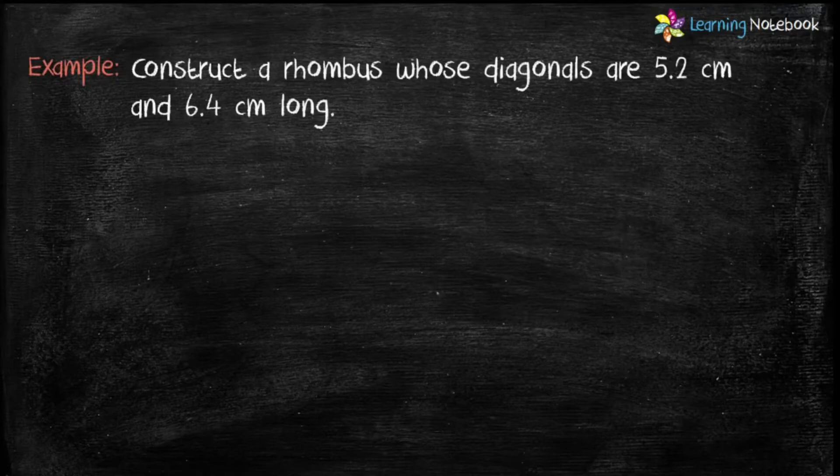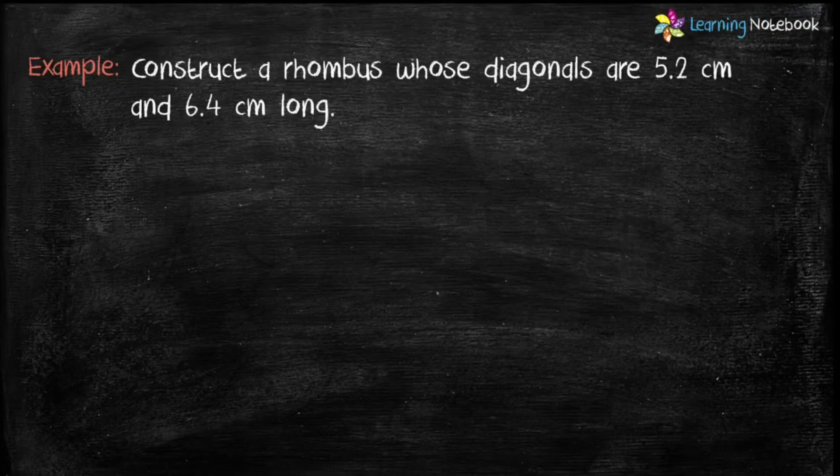Question is, construct a rhombus whose diagonals are 5.2 cm and 6.4 cm long.